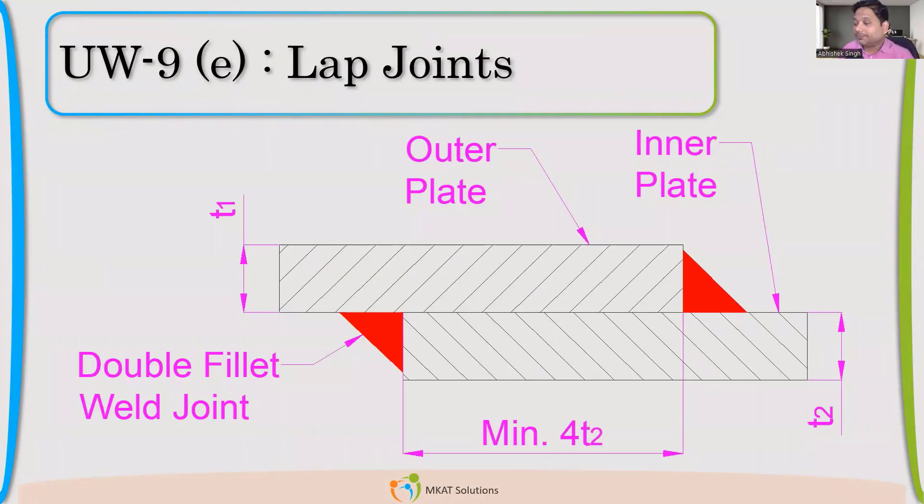Now, about lap joints. Has anybody seen lap joint in pressure vessel? Pressure vessel descend or shell welded with lap joints? Akash is saying yes. Nikhil is also saying yes. Santosh is saying no. Himanshu is saying no. If you have said yes, Akash, do you remember what was the pressure of that equipment?